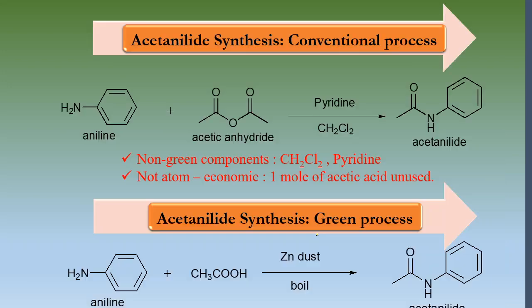Another example is acetanilide synthesis. Conventionally, you react aniline with acetic anhydride, but acetic anhydride has two acetyl groups (CH₃COO–), so one mole of acetic acid remains unused and comes out as a byproduct. Non-green reagents like methylene chloride and pyridine are also used. In the green process, you simply use acetic acid with zinc dust as a catalyst and heat it — you get beautiful white crystals of acetanilide. A video of preparing acetanilide using both conventional and green processes is available via the link in the description.